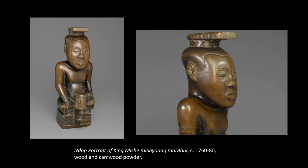During the first half of the 18th century, the Kuba king Misha Mishang Mabul was celebrated throughout his kingdom for his generosity and the great number of his loyal subjects — he was even the recipient of his own praise song. At the height of his reign in 1710, he commissioned an idealized portrait statue called a NADAP. This NADAP, portraying his likeness, was eventually purchased by the Brooklyn Museum in 1961 and has been on view since. It was first collected in 1909 by a colonial minister in what was then the Belgian Congo.